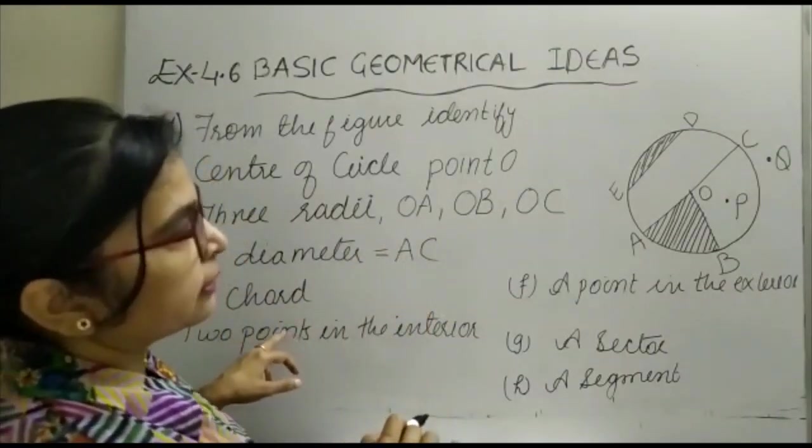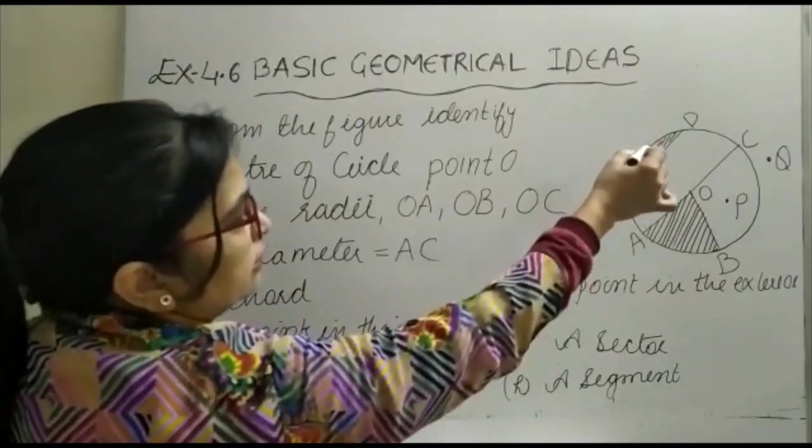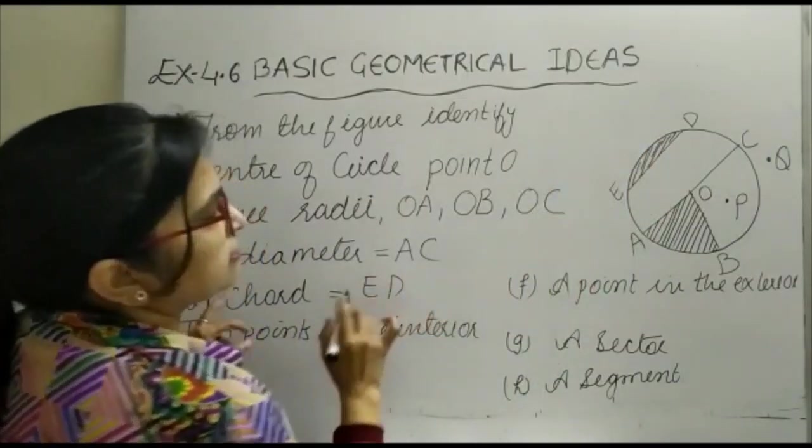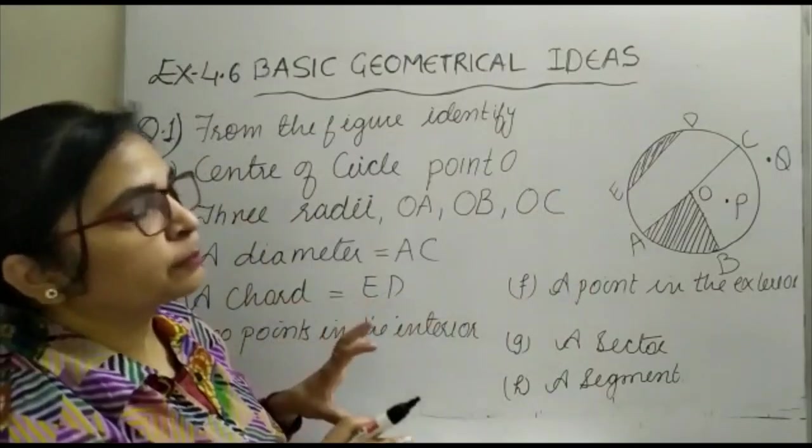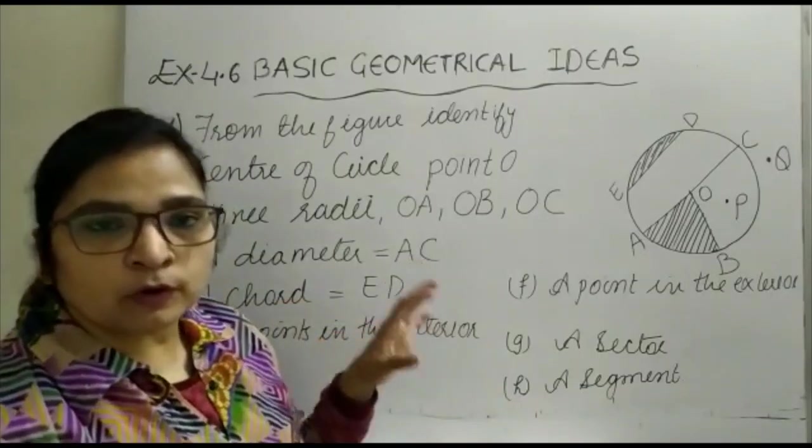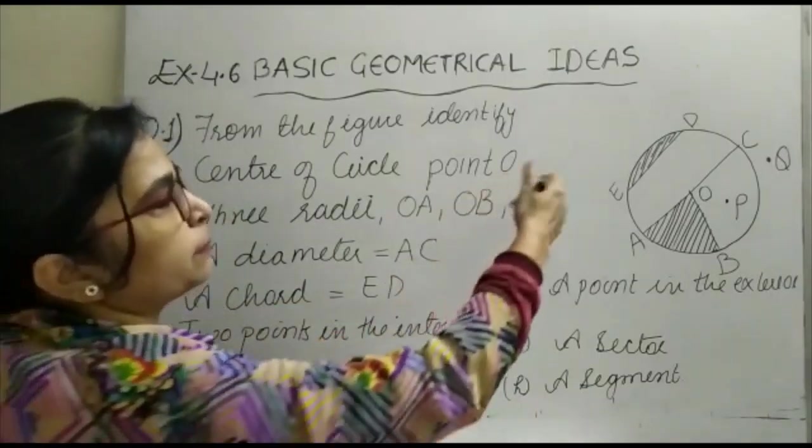A chord is ED. Any line segment with endpoints on the circumference will become a chord. Your diameter is also a chord.